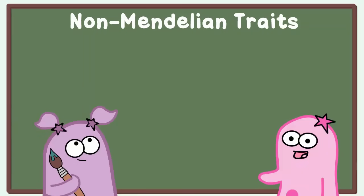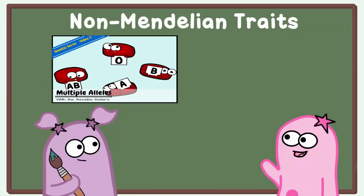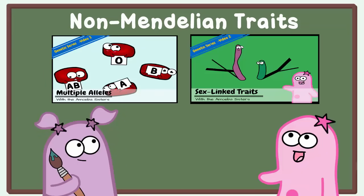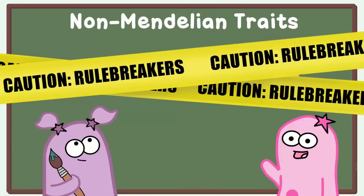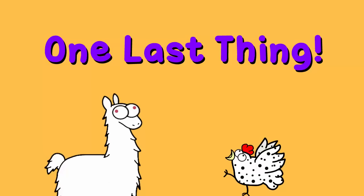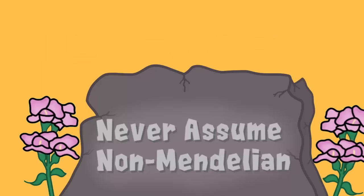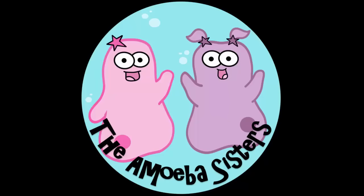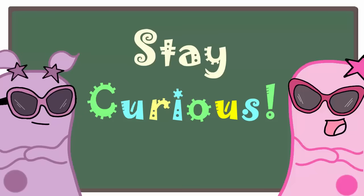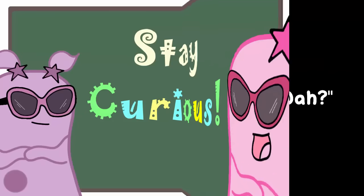There are many other non-Mendelian traits. We have another video on multiple alleles and a video on sex-linked traits — these are also non-Mendelian. It's fascinating to see what can happen when you have these rule breakers. Keep in mind that when problem solving in genetics, you do not want to just assume it's non-Mendelian unless you are provided information or clues in the problem that it might be. That's it for the Amoeba Sisters, and we remind you to stay curious.